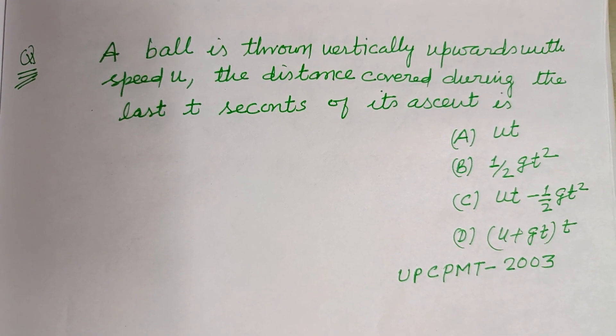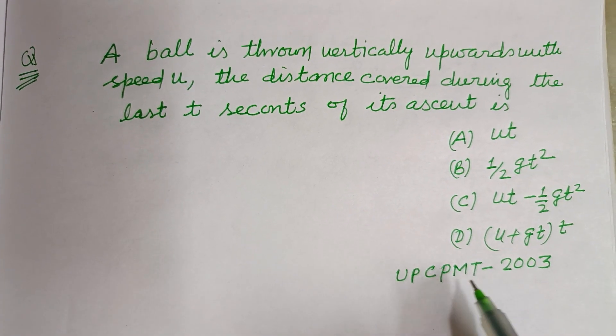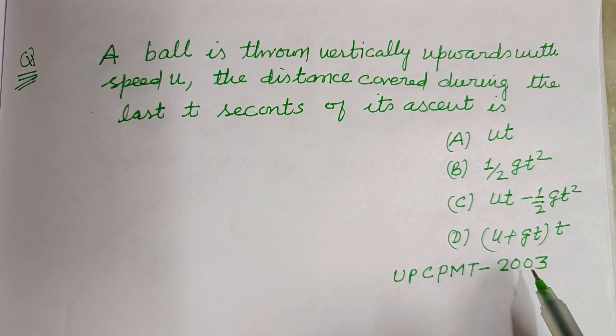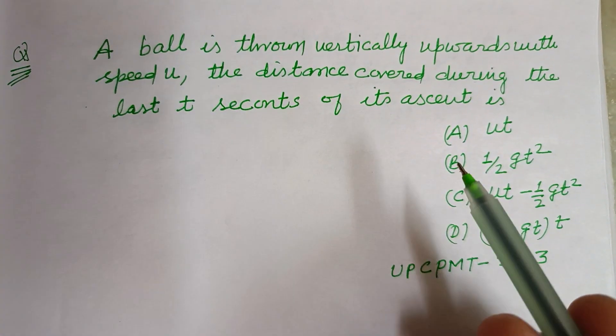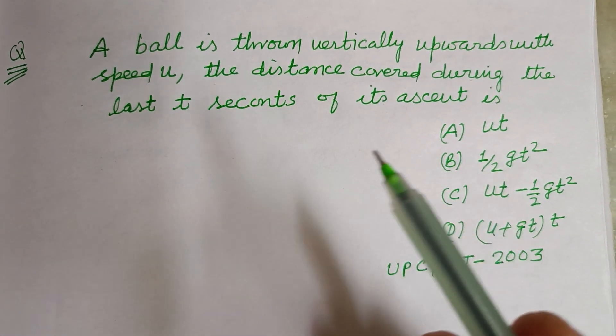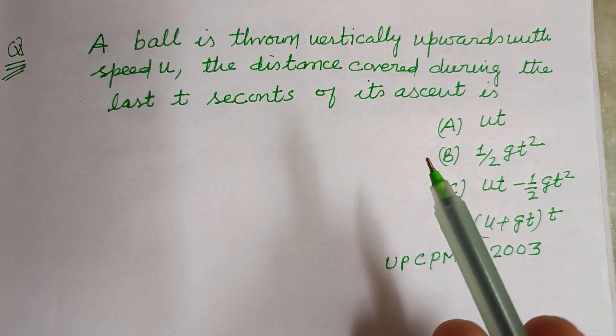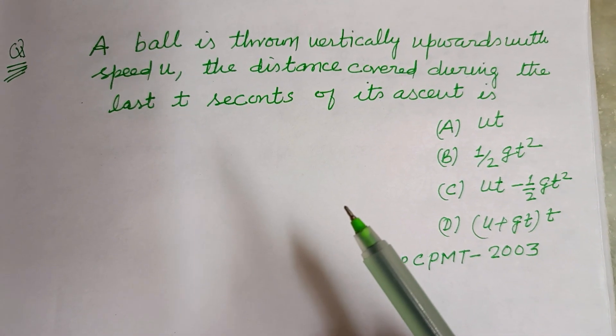Hello viewers, warm welcome to this YouTube channel. This is a question from UPCPMT 2003. A ball is thrown vertically upward with speed u; the distance covered during the last t seconds of its ascent is: